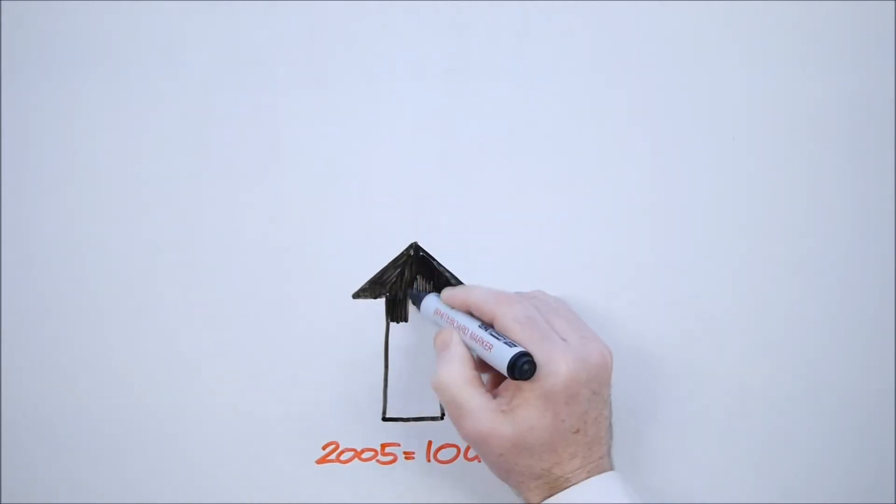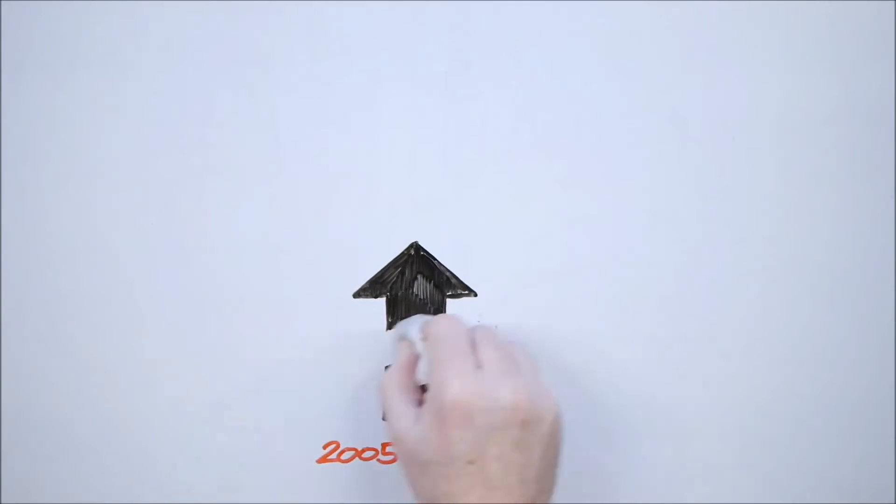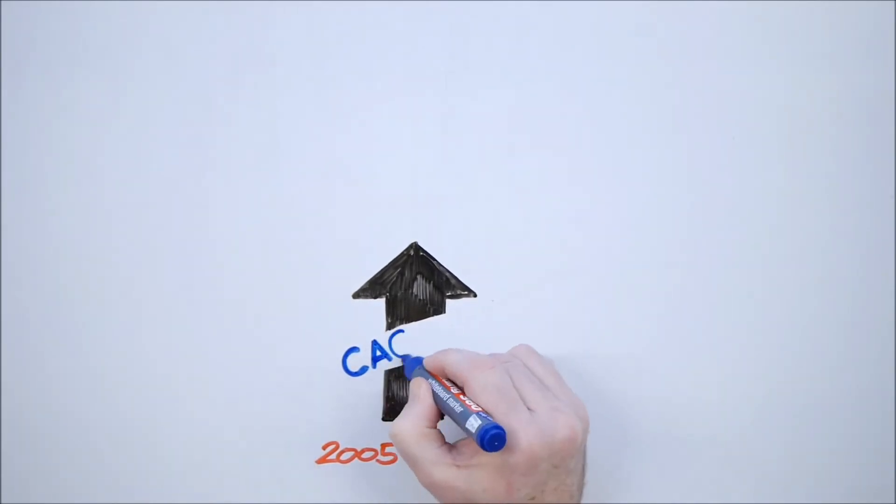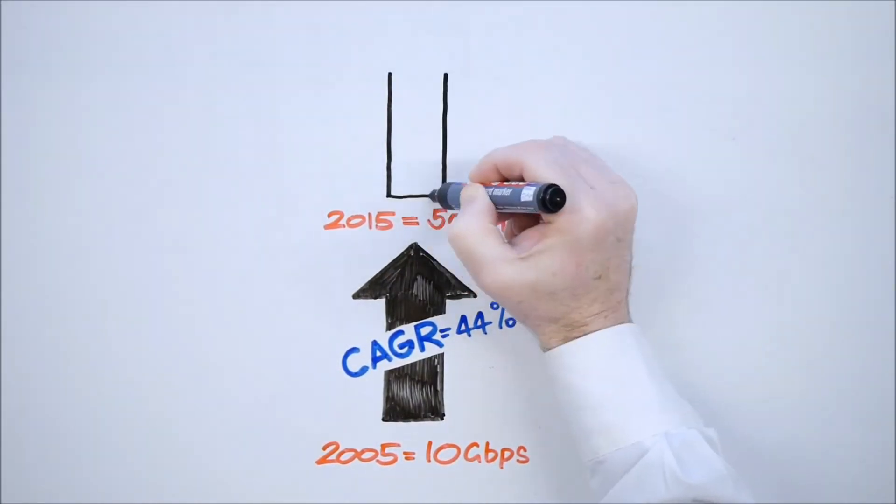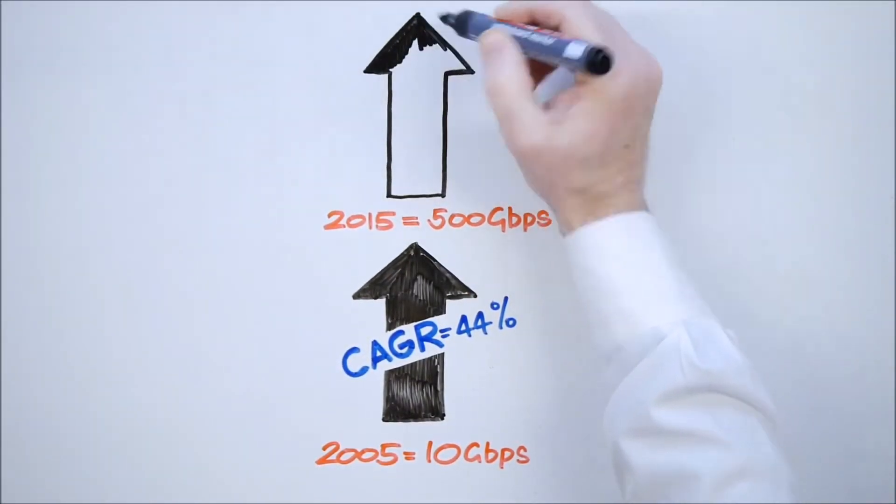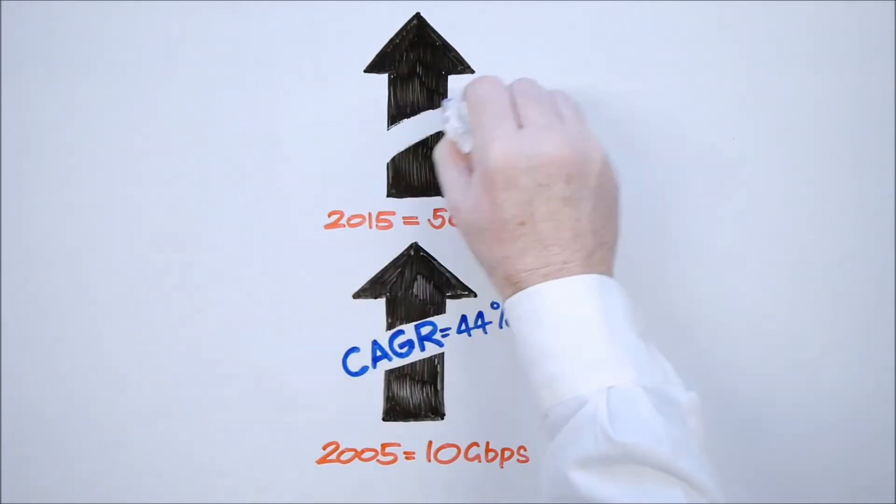Since Arbor began the Worldwide Infrastructure Security Report in 2005, DDoS attack size has grown 7,900% for a compound annual growth rate of 44%.